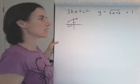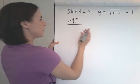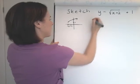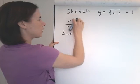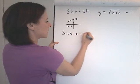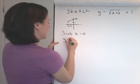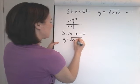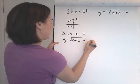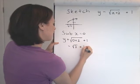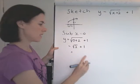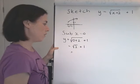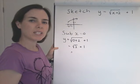In any graph you draw, you need to show the intercepts, so let's find that first. For y-intercept we sub x equals 0. Y equals square root of 0 plus 2 plus 1, which is root 2 plus 1.